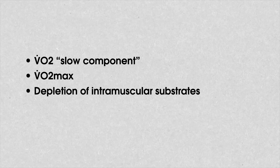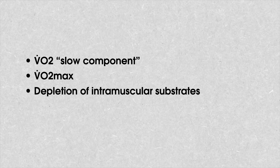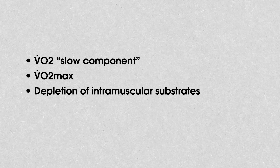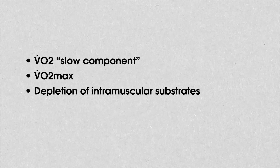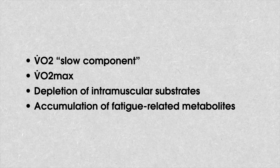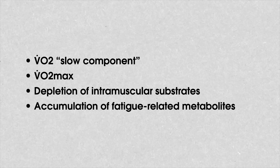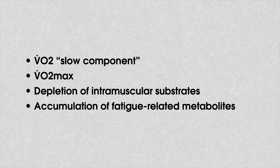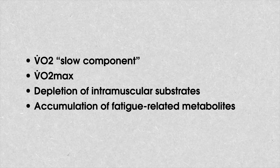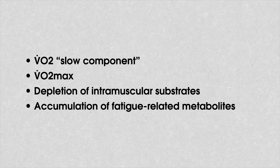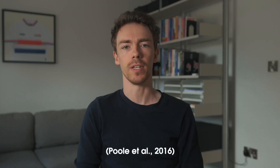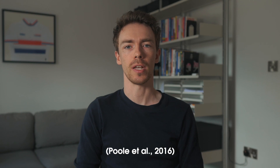W' is a function of the VO2 slow component, VO2 max, the depletion of limited intramuscular substrates — i.e. phosphocreatine and glycogen — and the associated accumulation of fatigue-related metabolites such as hydrogen ions, adenosine diphosphate and inorganic phosphate. Each of these has been associated with impaired muscle contractile function.